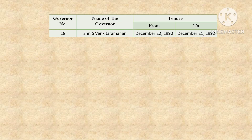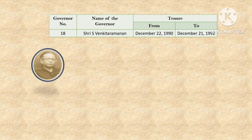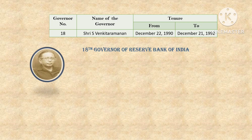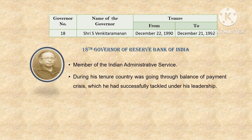The eighteenth governor was Sri S. Venkita Ramanam. His tenure was from December 22, 1990 to December 21, 1992. He was a member of the Indian Administrative Service. During his tenure, the country was going through a balance of payment crisis, which he successfully tackled under his leadership.